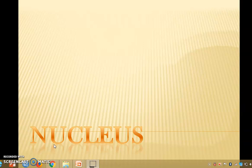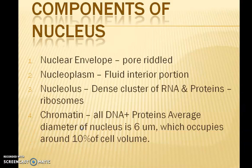Nucleus is the controlling center of a cell. It controls all the activities of a cell and our genetic or hereditary material is stored inside the nucleus. There are different components of the nucleus like the nuclear envelope, which is the covering of the nucleus, and then the nucleoplasm, nucleolus, and chromatin. These are the components present in the nucleus.